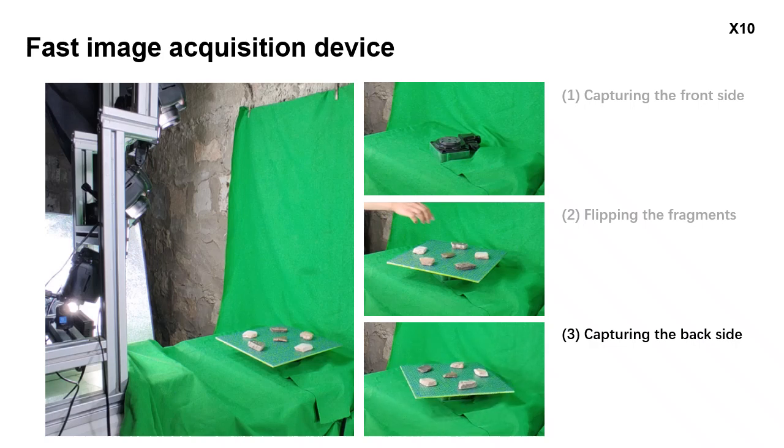Like the front side, another batch of images will be captured. After capturing the back side, we can change the fragments and start to capture the next group of fragments.